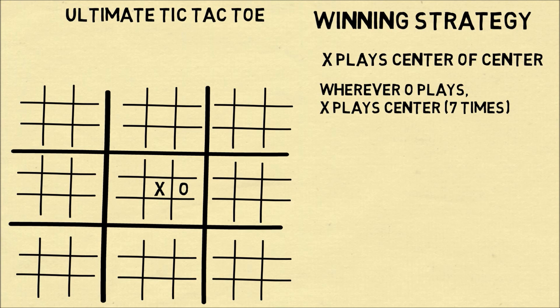So O plays the middle right, X should respond by playing the center. This will force O to be in the center again, and wherever O picks, X will again respond by picking the center.